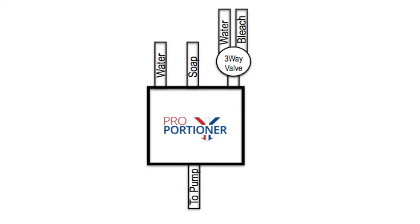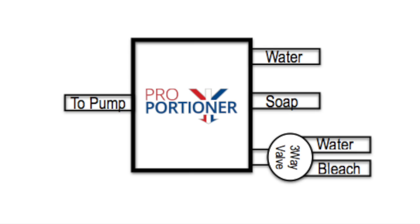We've included this diagram to show you where your various pickup tubes and hoses will go. Your output will go to your pump. You'll have a pickup tube going to the water, a pickup tube going to the soap, and on your flush kit, which is a three-way valve, you'll have a tube going to water and a tube going to bleach.